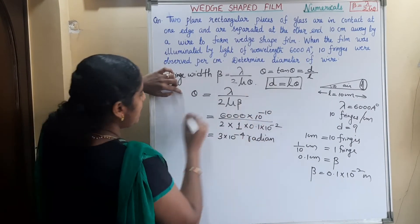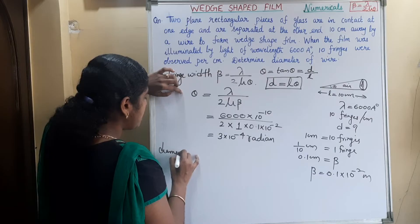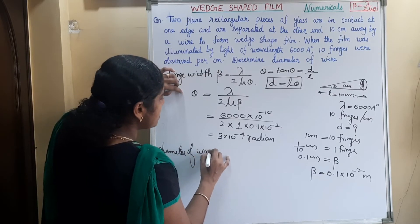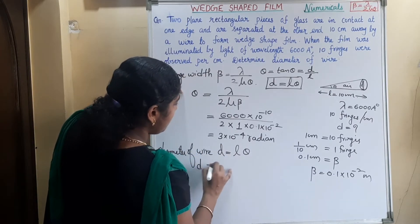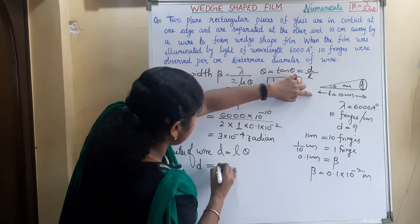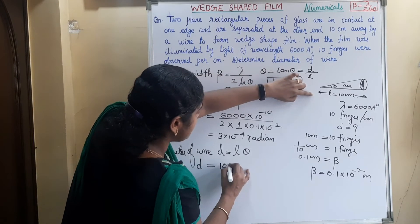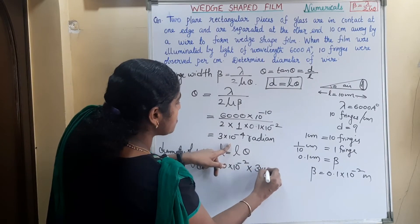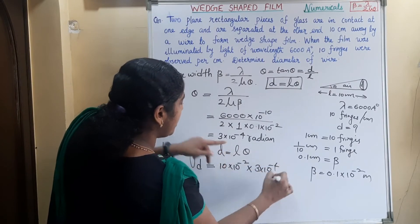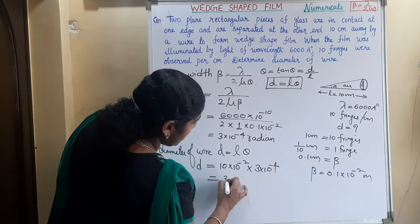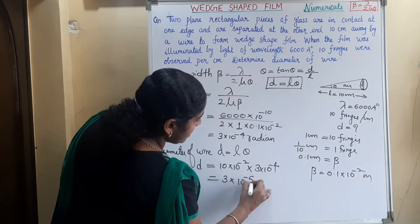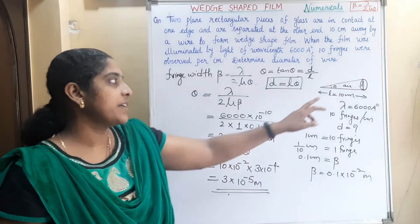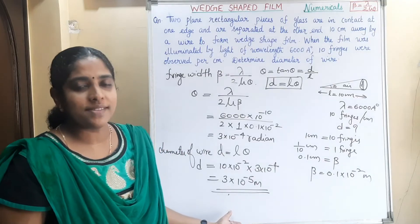Now we can find out the diameter of the wire: D is equal to L theta. So D is equal to L is 10 centimeter, that is 10 into 10 raise to minus 2 meter, into theta is 3 into 10 raise to minus 4 radian, that is equal to 3 into 10 raise to minus 5 meter. So the diameter of the wire is 3 into 10 raise to minus 5 meter.